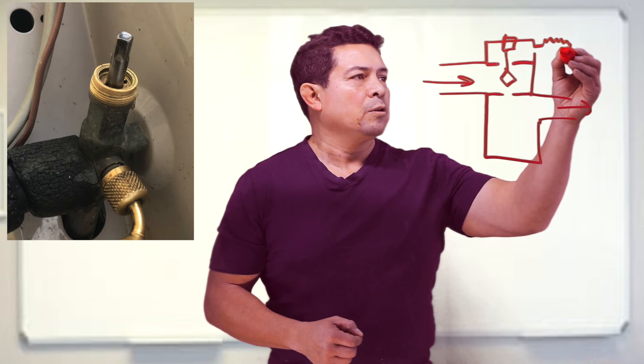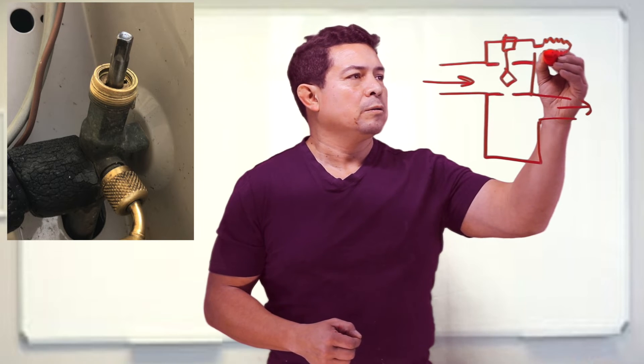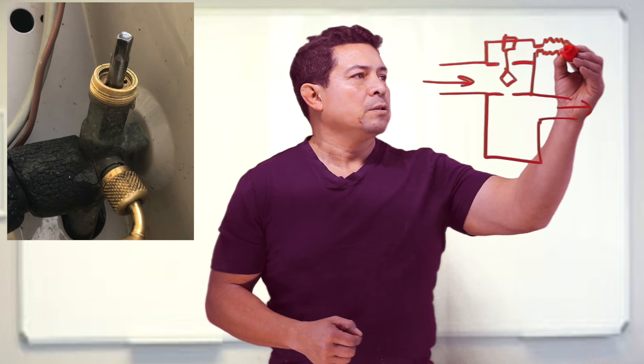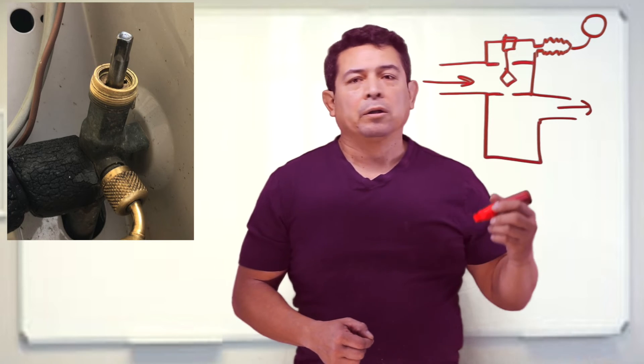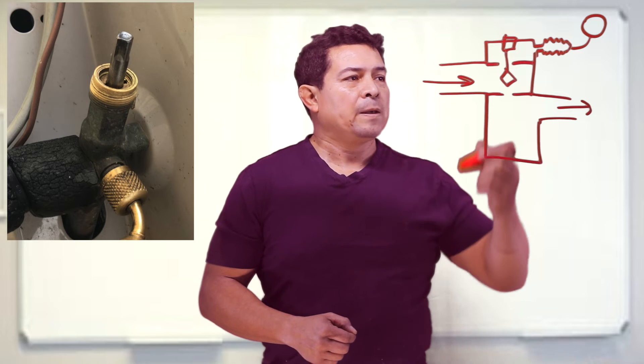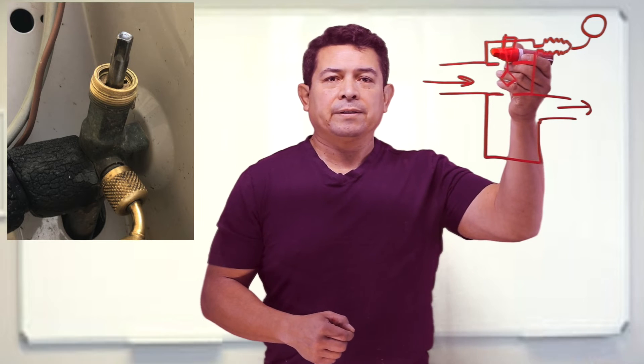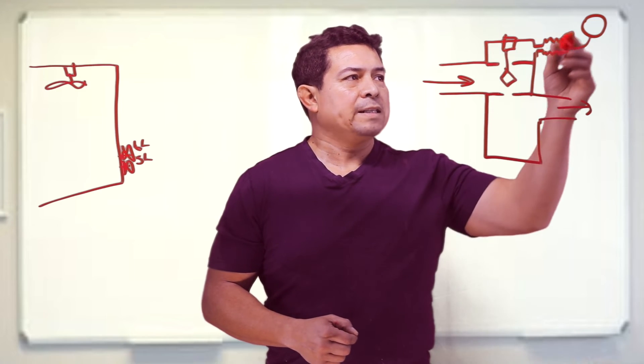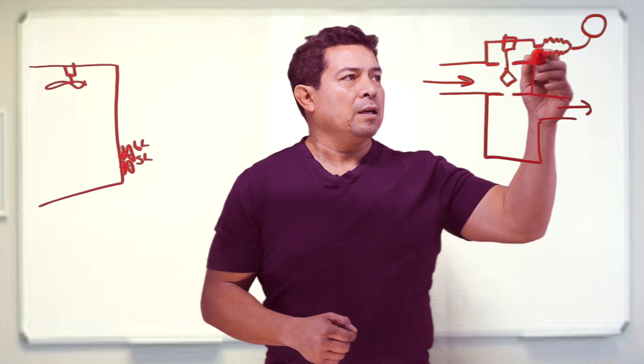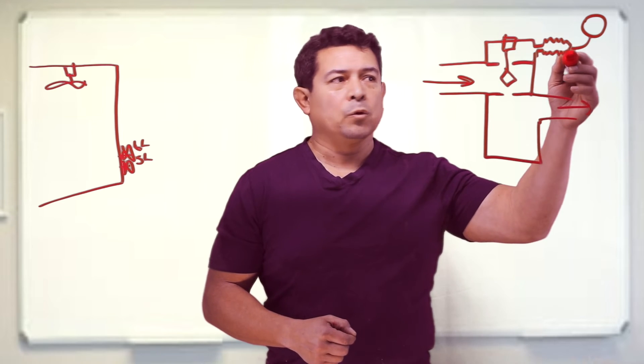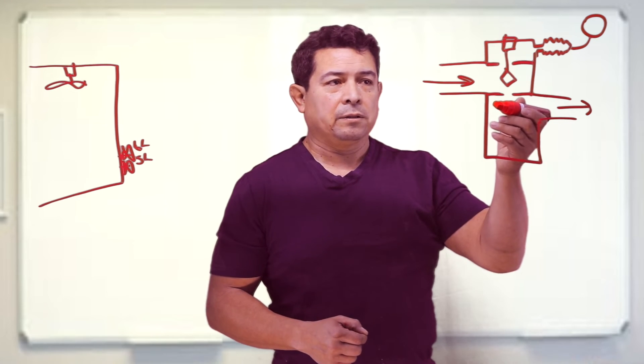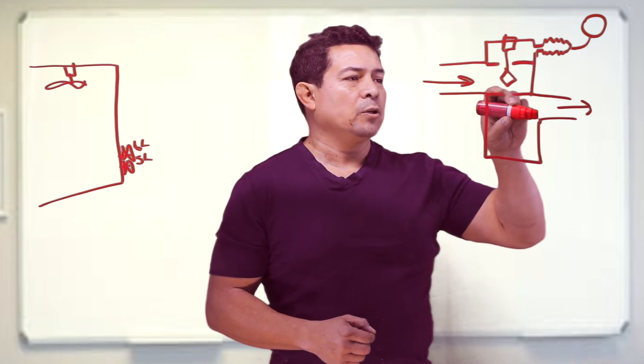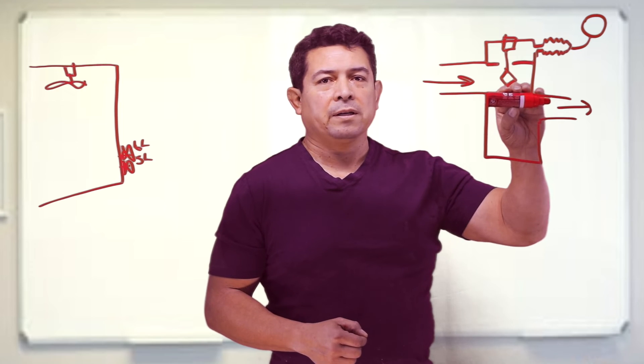So we actually hook up our high side gauge or our low side gauge right here. So if this is all the way back then you're going to isolate this and you're not going to get a reading. You won't be able to add refrigerant to it. If you have it all the way down then there's not going to be any flow because you have stopped it right here.